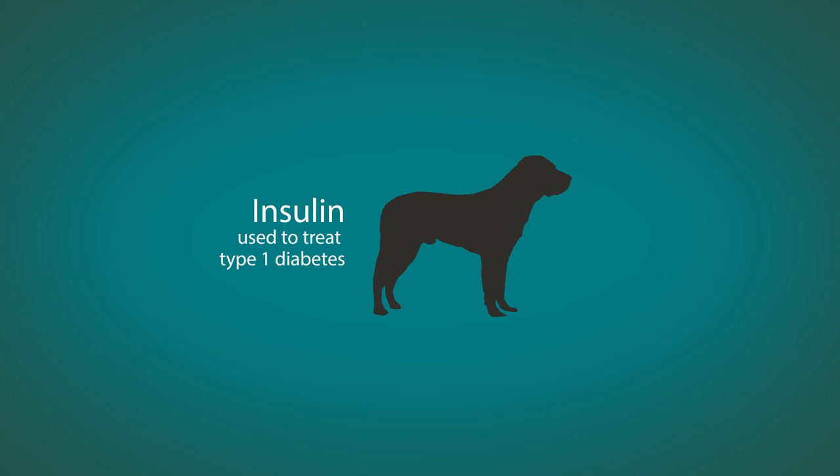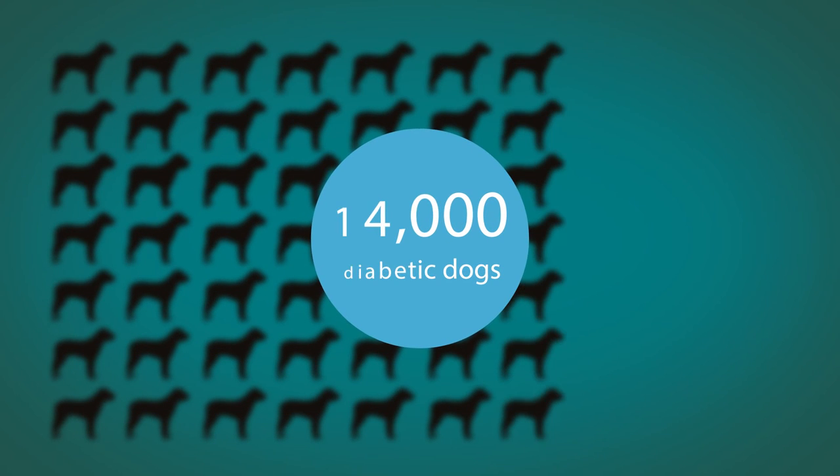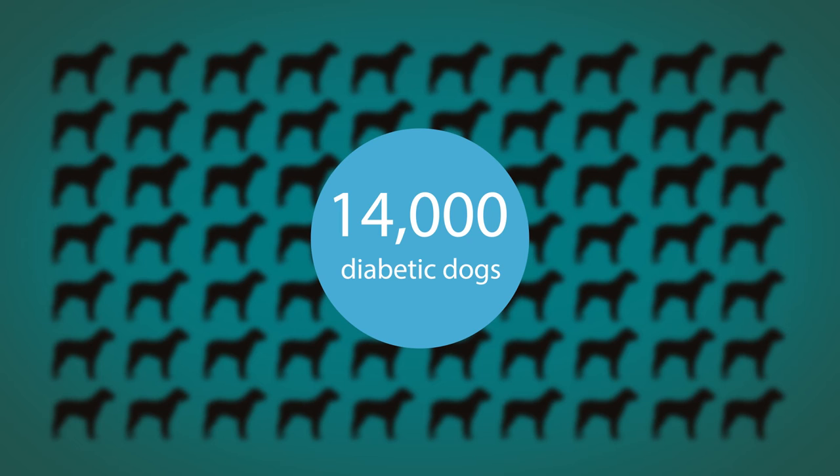Insulin, used to treat type 1 diabetes, was discovered using dogs, which are also affected by the disease. There are 14,000 diabetic dogs alive in the UK as a result of insulin.